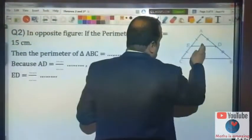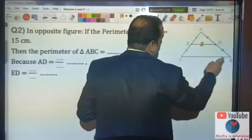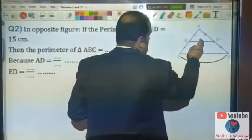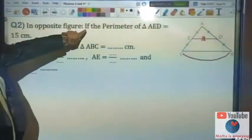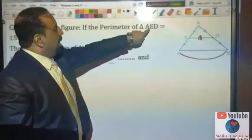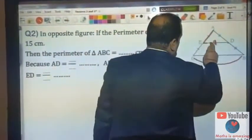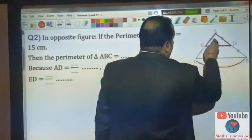AD equals half BC. Then in this figure, if the perimeter of triangle AED is 15, then the perimeter of triangle AEDC will be...